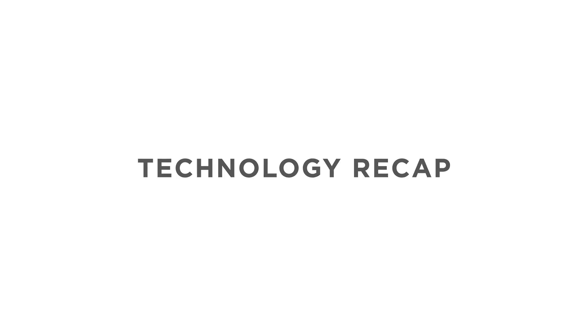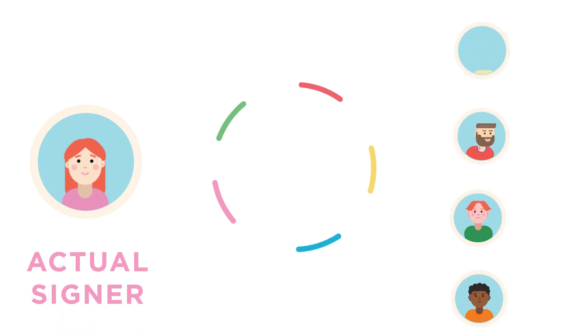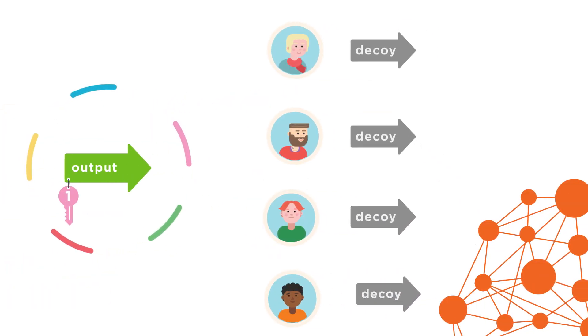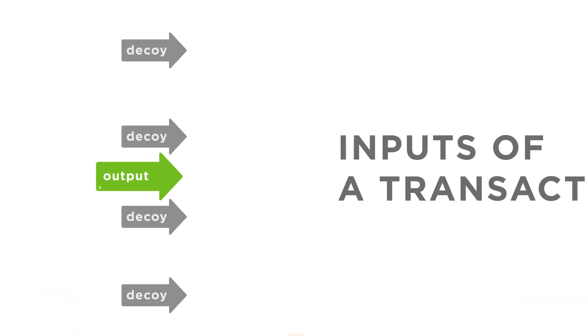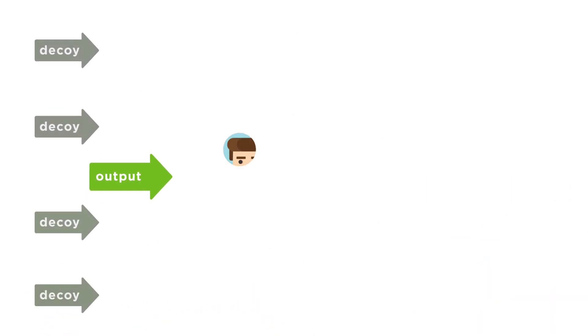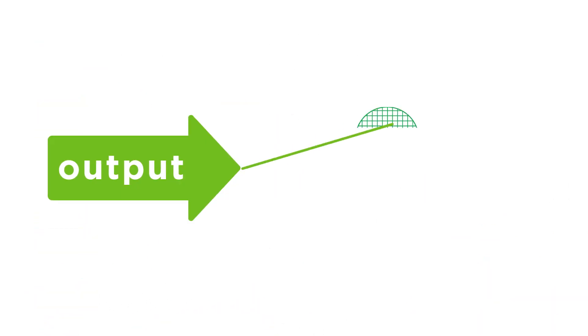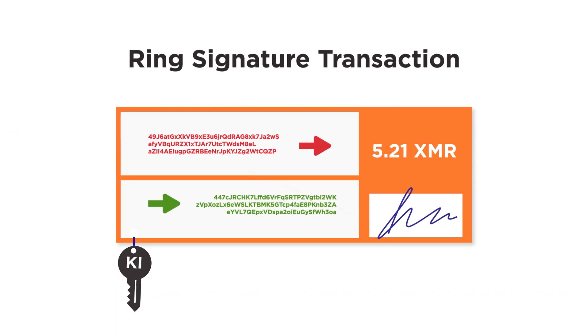In our last video, we illustrated how Monero ring signatures protect senders' privacy by preventing transaction inputs from being distinguishable from one another. This is accomplished by the use of digital signatures, where there is an actual signer hidden among multiple ring members to authorize a transaction. Additionally, we learned that key images are used to prevent Monero inputs from being spent more than once.